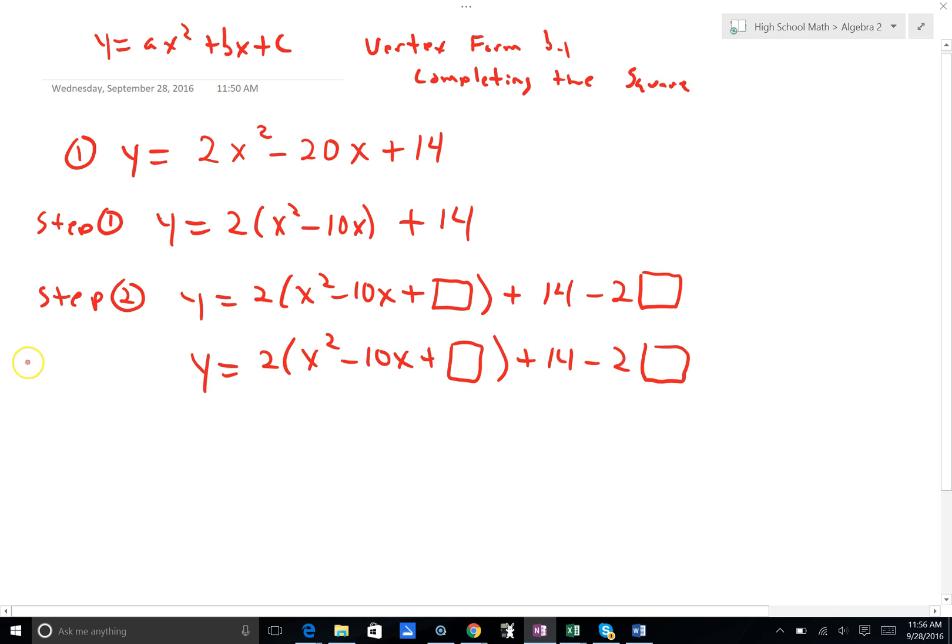This box number is going to be half of the coefficient of my x, I'm calling that my b in this case, half of b quantity squared. So consider, what is half of minus 10? It's minus 5. Minus 5 squared is 25. That's what goes in the box inside and outside.